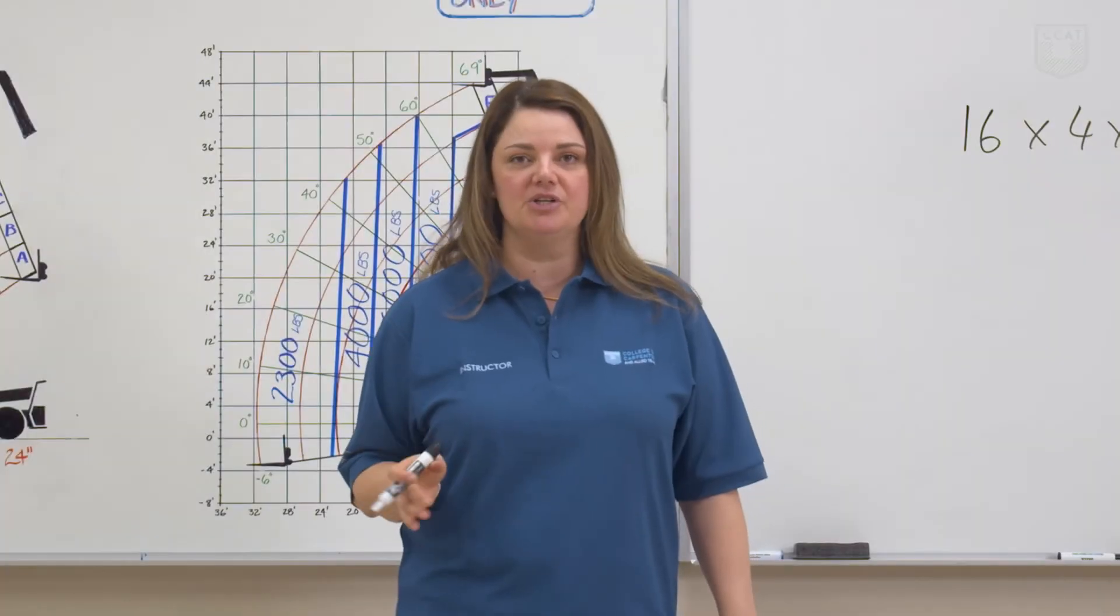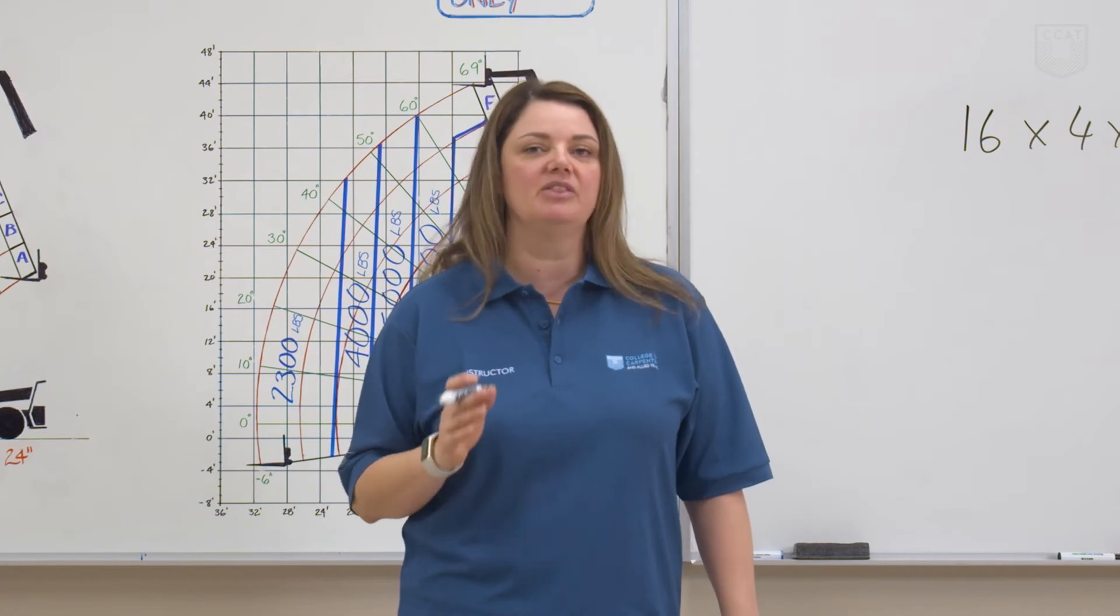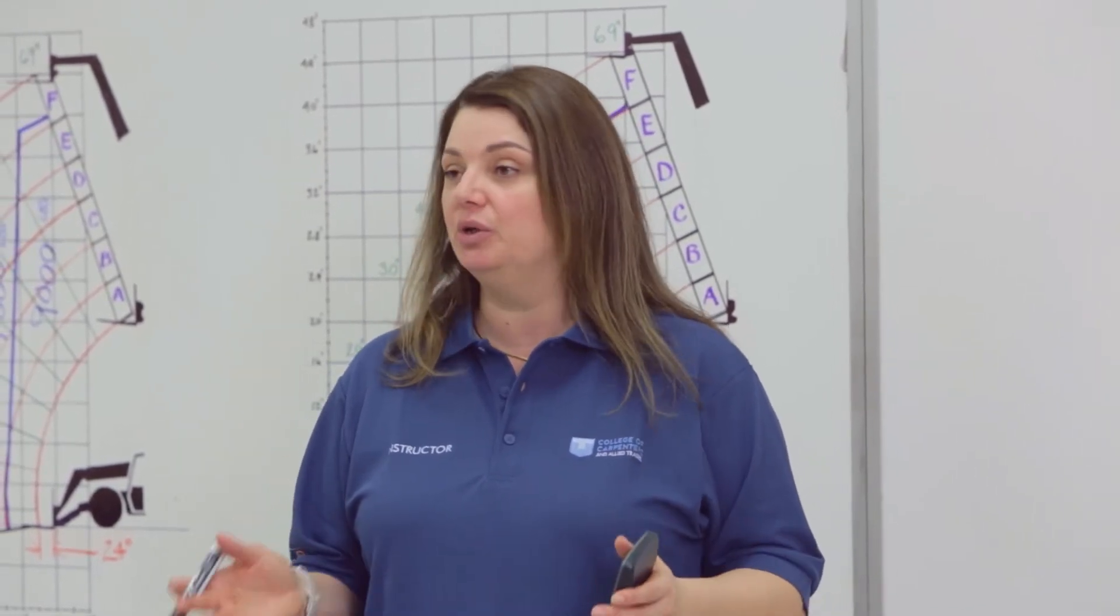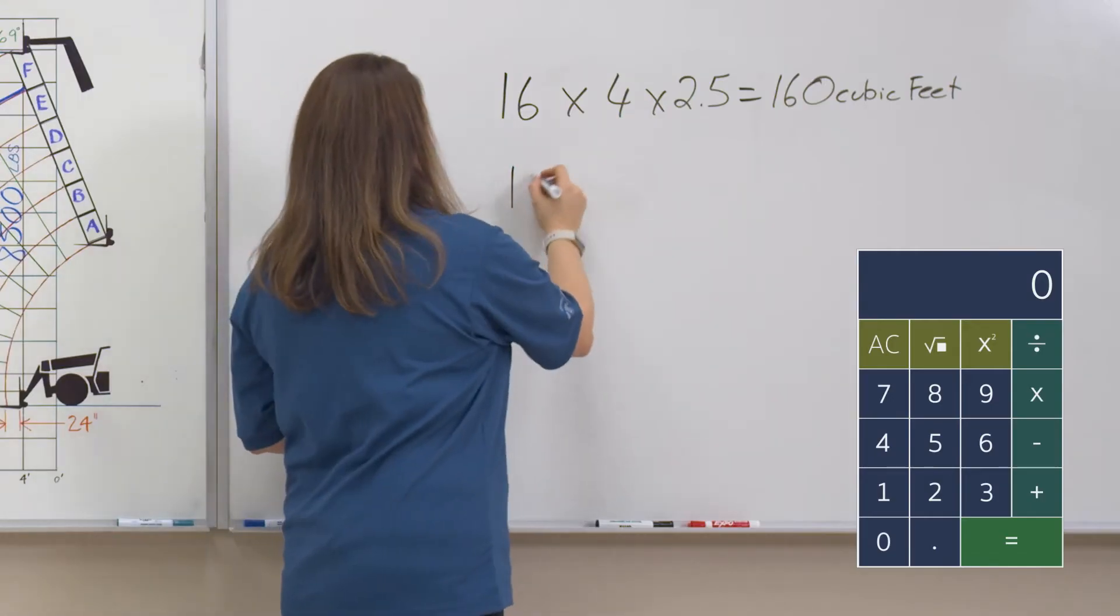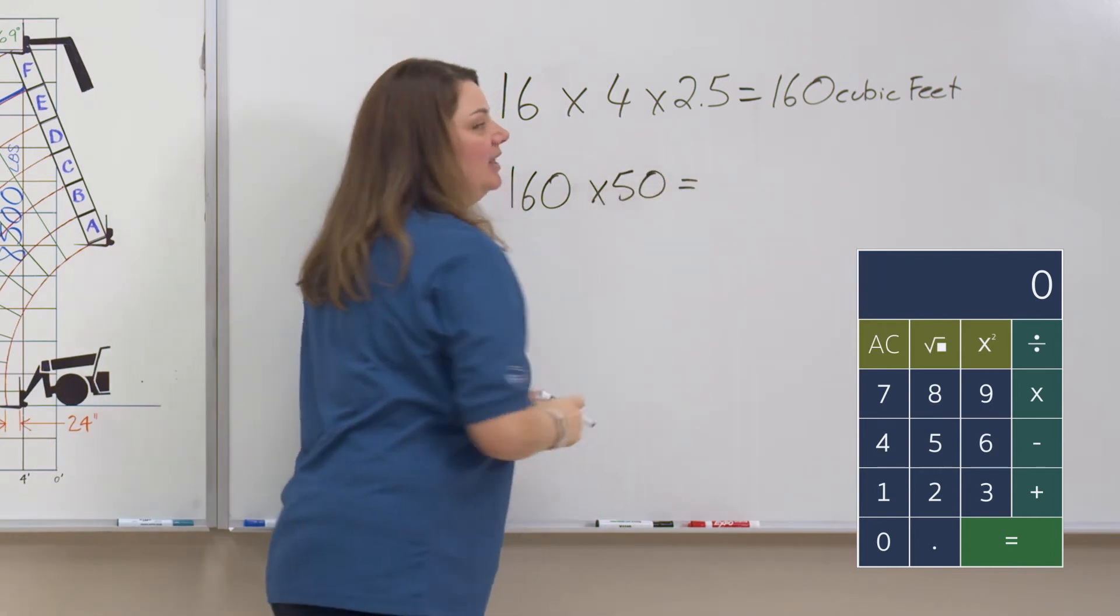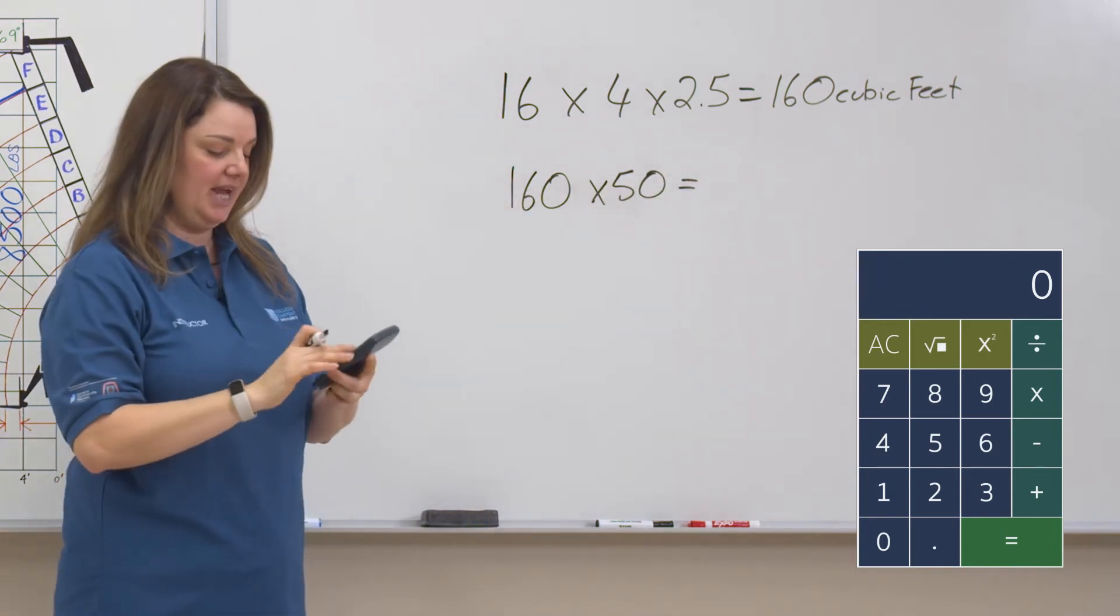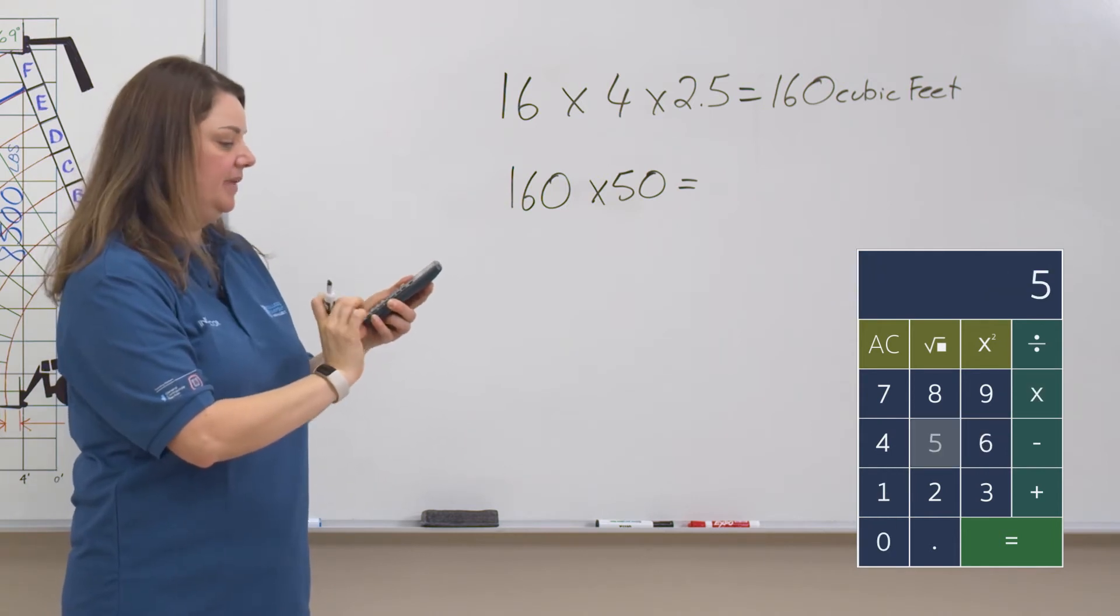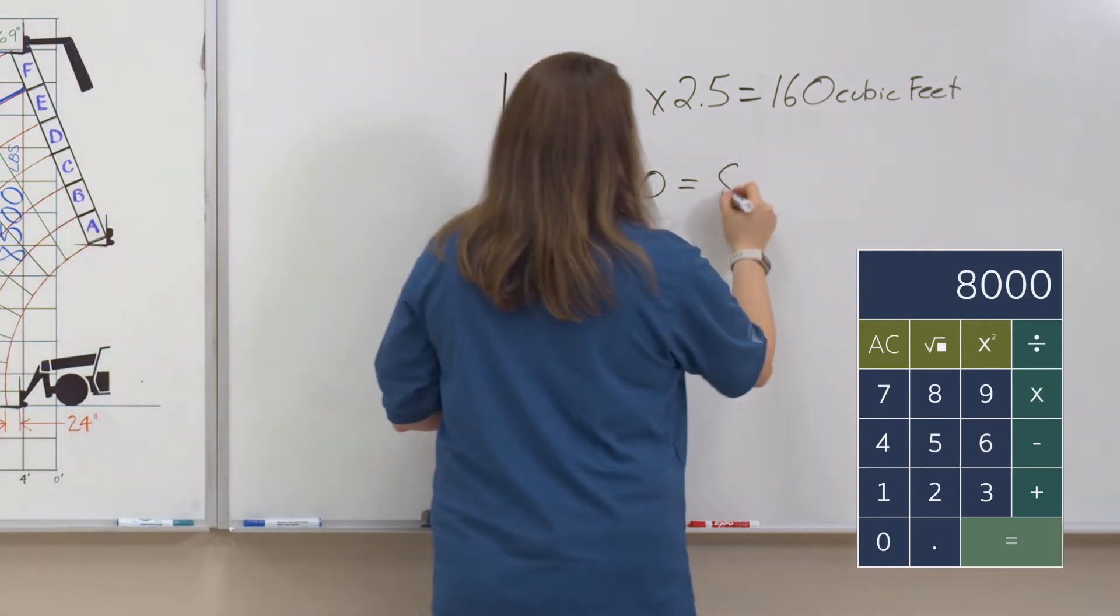Now we're going to refer to our riggers pocket guide to find out that the weight of our wet softwood is 50 pounds per cubic foot. Now I'm going to take my 160 cubic feet and multiply it by my 50 pounds to get my total load. Let's do the calculation together. 160 times 50 gives me a total of 8,000 pounds.